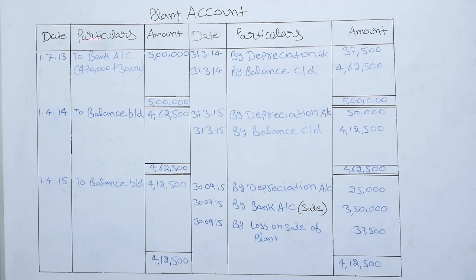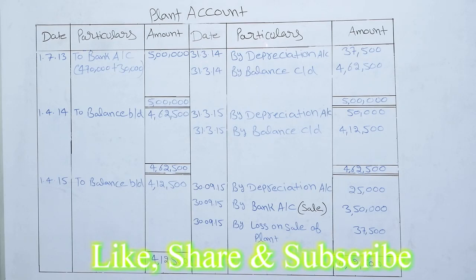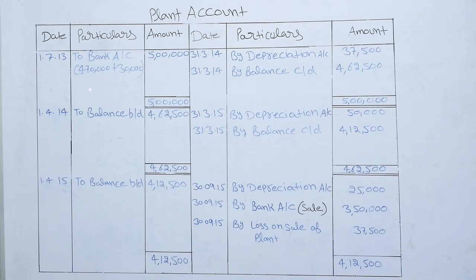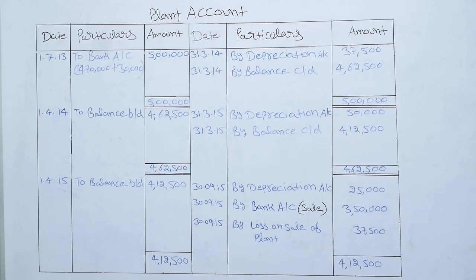Now we are preparing the plant account with columns: date, particulars, and amount. ABC Ltd purchased on 1st July 2013 a machine for Rs 4,70,000 plus spent Rs 30,000 on its repair, so the total value of the machine is Rs 5,00,000. The entry will be plant account debit to bank account. ABC Ltd charged depreciation on 31st March every year at the rate of 10% using the straight line method. So Rs 5,00,000 × 10% × 9/12.